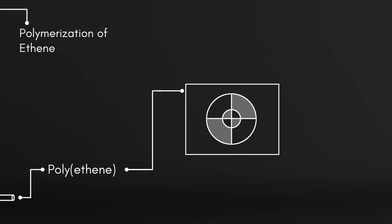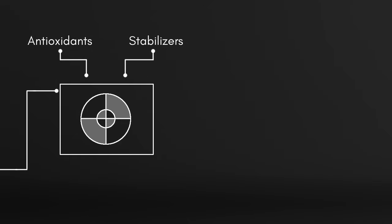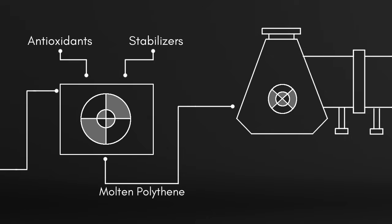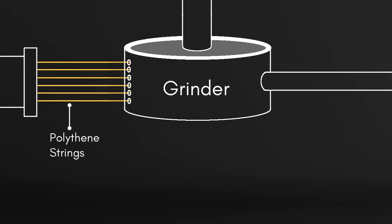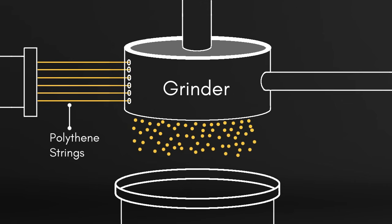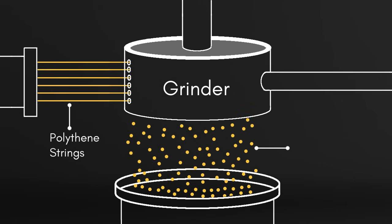Polyethylene is sent to a chamber that adds antioxidants and stabilizers. Then the polyethylene gets into the extruder, which converts polyethylene into polyethylene strings. Polyethylene strings are passed through the grinder or pelletizer, which converts polyethylene strings to polyethylene pellets, means plastic pellets.